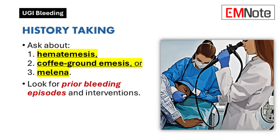A comprehensive patient history includes inquiry about hematemesis, coffee ground emesis, and melena, as these symptoms suggest an upper gastrointestinal source of bleeding. Vomiting followed by hematemesis may indicate a Mallory-Weiss tear. Prior episodes of bleeding, past interventions, and a history of an aortic graft are relevant details to identify possible aortoenteric fistulas.